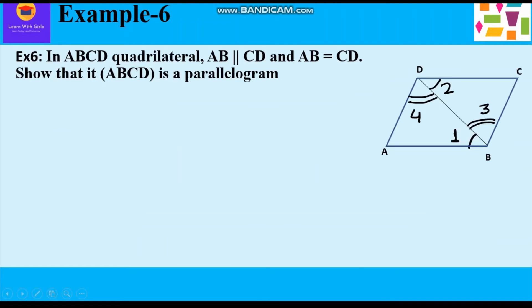Now let us take up example 6. In quadrilateral ABCD, AB is parallel to CD and AB is equal to CD. Show that it is a parallelogram. We are given AB is parallel to CD and AB equals CD, and we have to prove it is a parallelogram. Whenever we have to prove that a quadrilateral is a parallelogram, we need to prove the alternate angles to be equal — when alternate angles are equal, the opposite sides will be parallel.